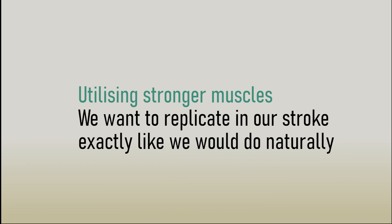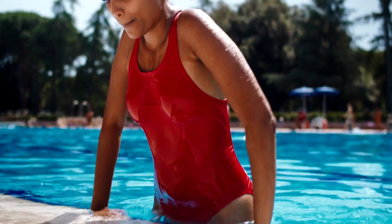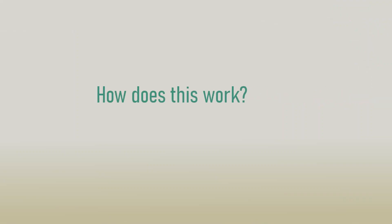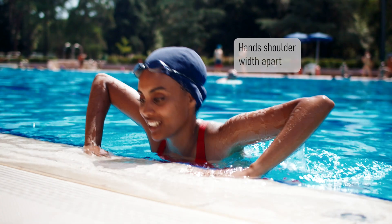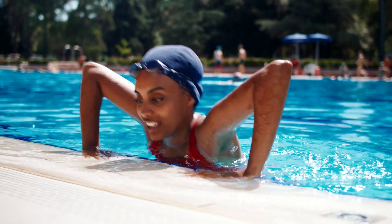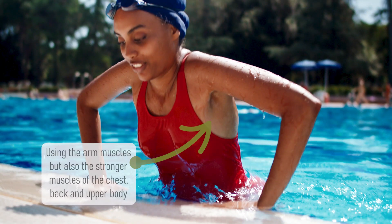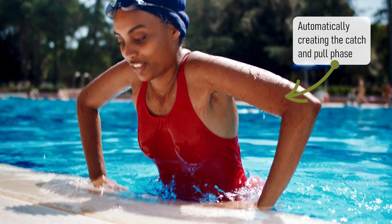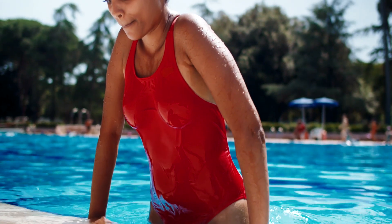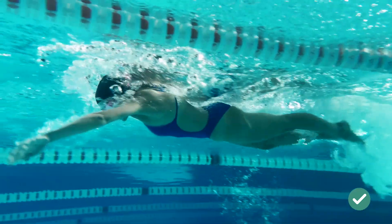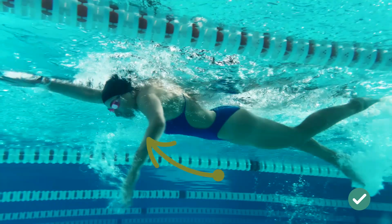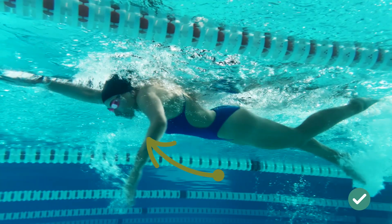To demonstrate the strength of these muscles, we just need to watch a common motion you might do at the pool — getting out of the pool along the edge. You hold the side of the pool shoulder-width apart and start applying pressure to move the body, with the main force coming from this pull phase. You can see how automatically you engage a similar catch position, then drive the larger muscles to propel yourself upwards. You want to replicate this motion in your catch and pull phase while swimming.